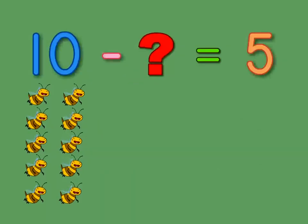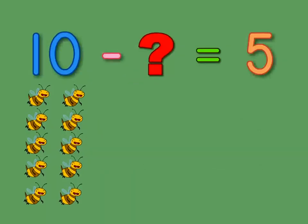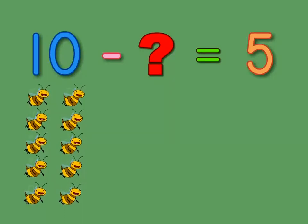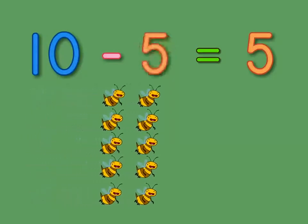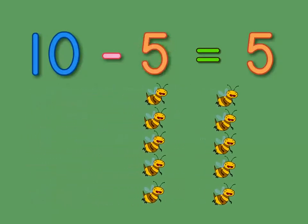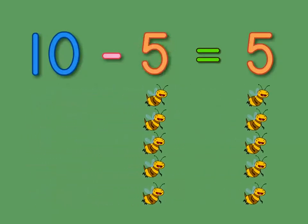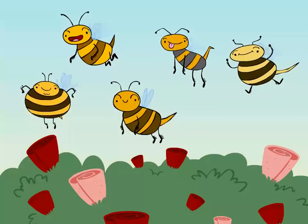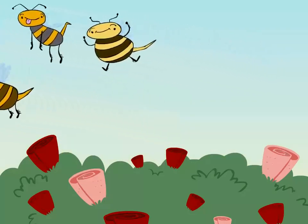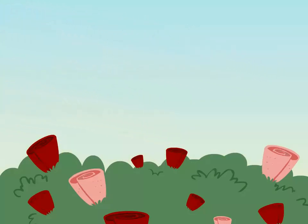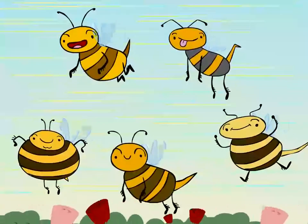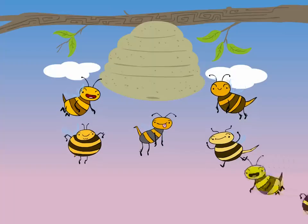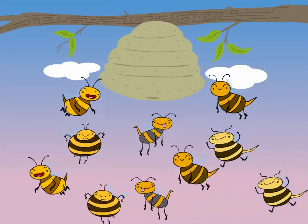10 minus 1 equals 5. 10 minus 5 equals 5. 5 missing bees returning to the hive. Oh yeah, 5 missing bees are returning to the hive.